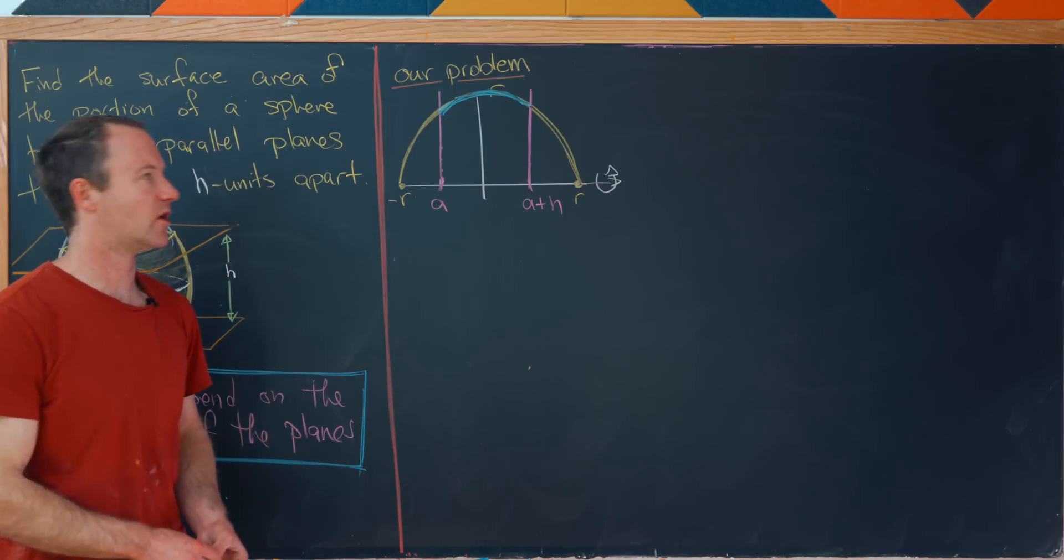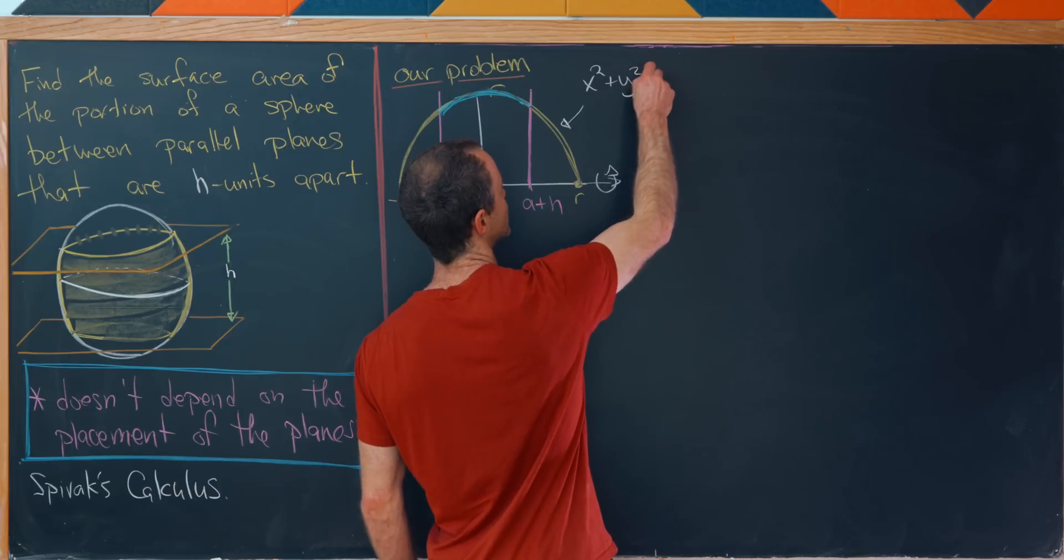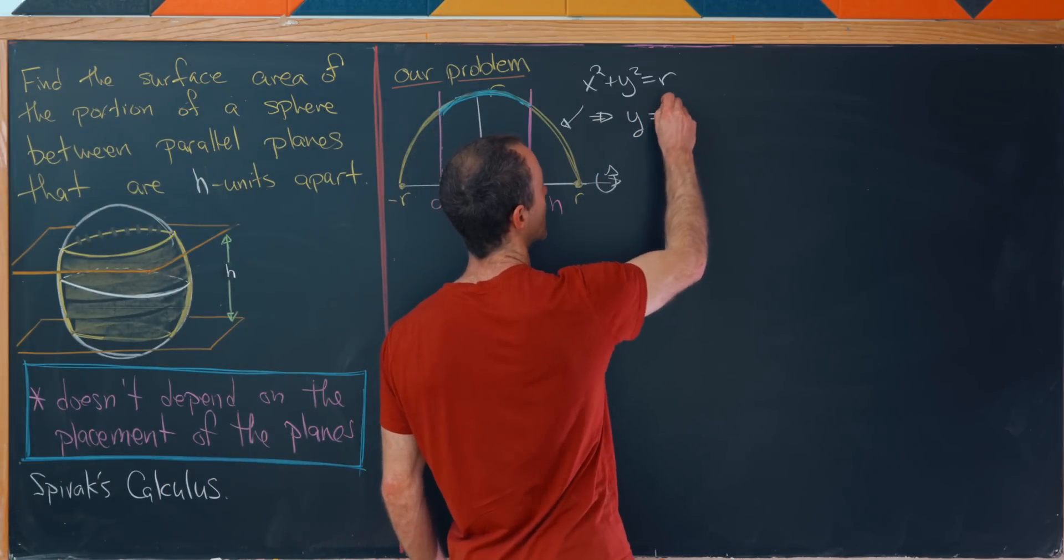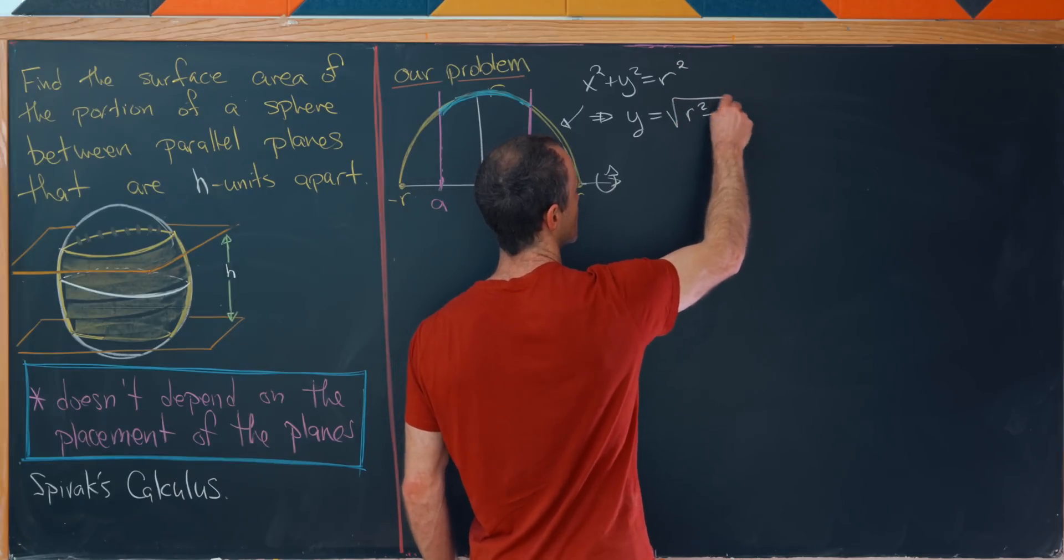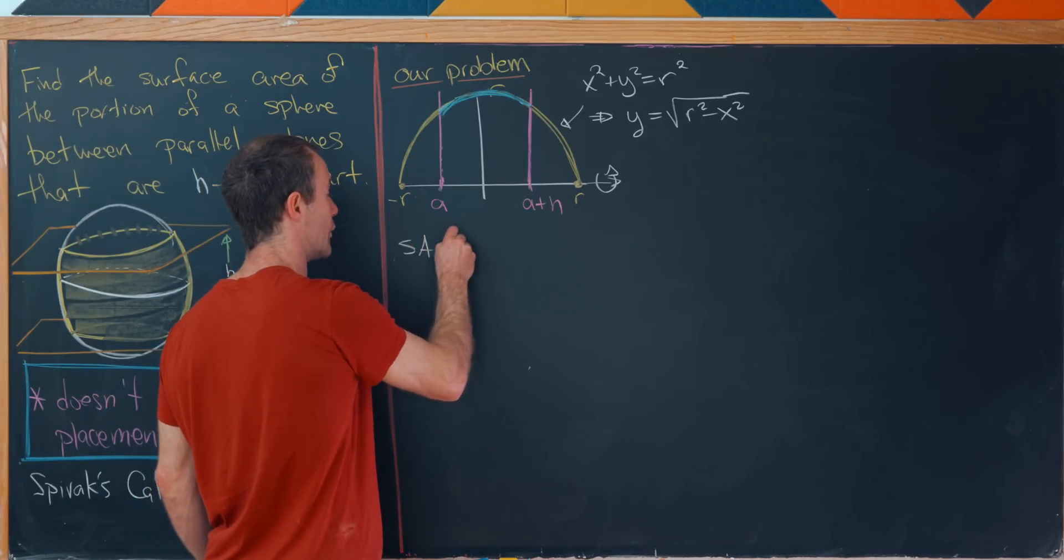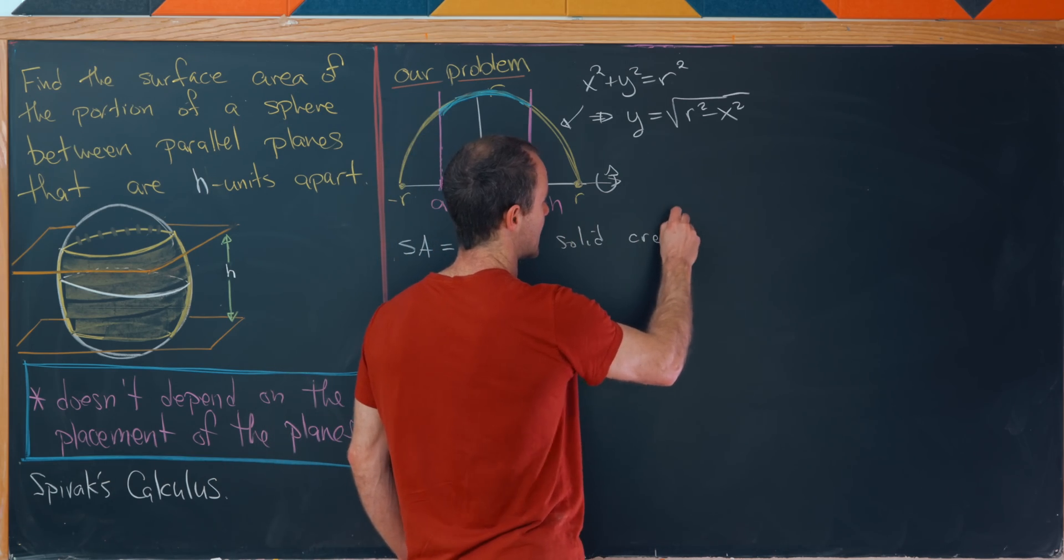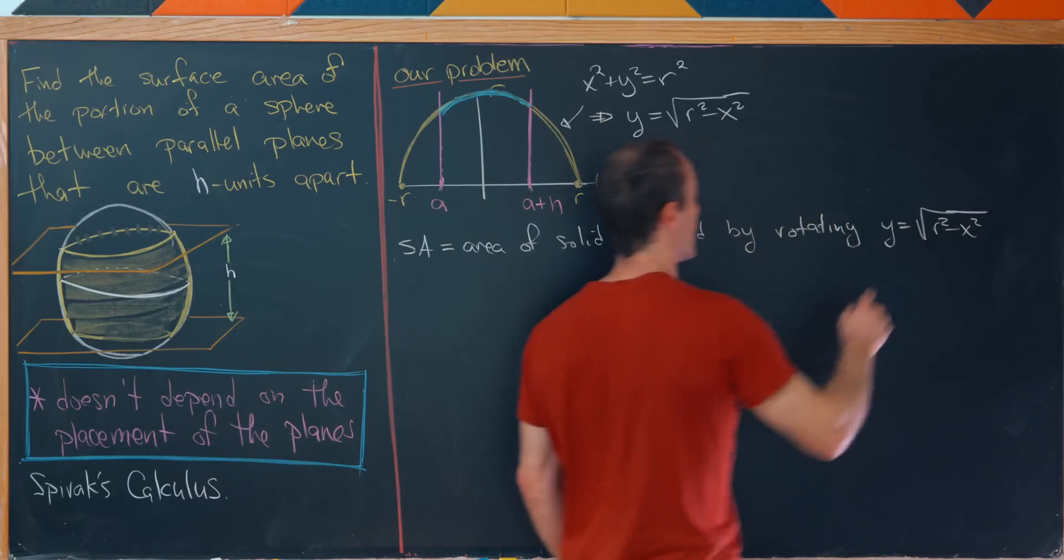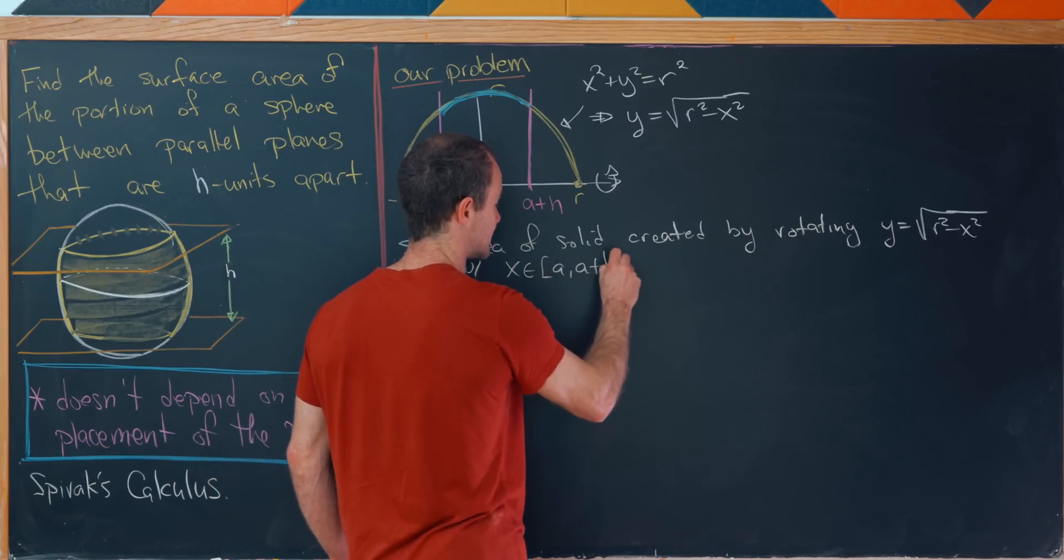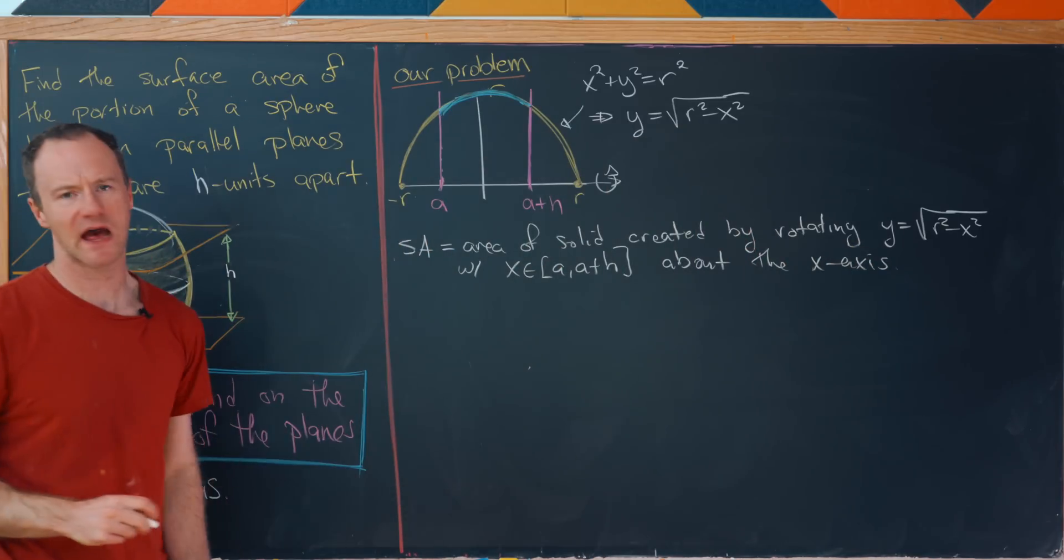But now let's put this in terms of our volumes of solids of revolution. So this guy right here is built from the equation x squared plus y squared equals r squared. That's the equation of the entire circle. But the top half can be gained by solving for y and taking the positive square root. So we've got y equals square root of r squared minus x squared. So that means the surface area that we are interested in is the area of the solid created by rotating y equals square root of r squared minus x squared with x on the interval a to a plus h about the x axis. So that puts it exactly in terms of what we had on the board before.